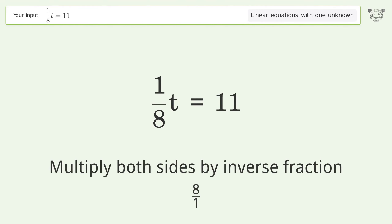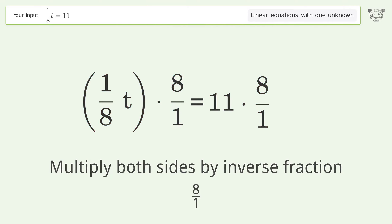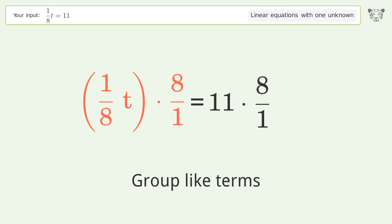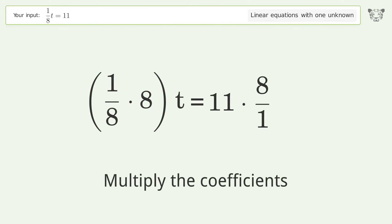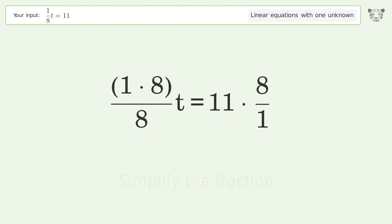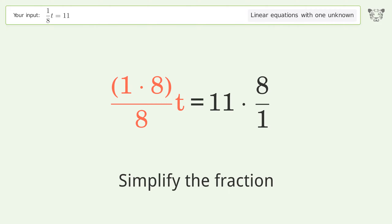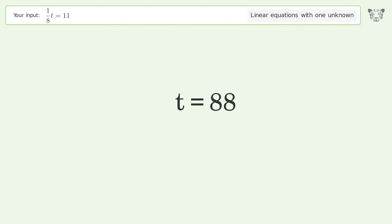Multiply both sides by the inverse fraction 8 over 1. Group like terms, multiply the coefficients, and simplify the fraction. Simplify the arithmetic, and so the final result is t equals 88.